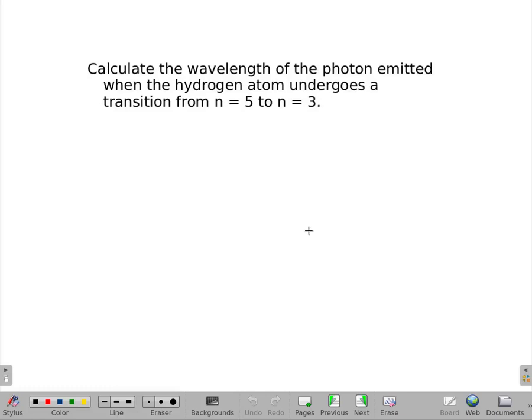Calculate the wavelength of a photon emitted when a hydrogen atom undergoes a transition from n = 5 to n = 3 levels.